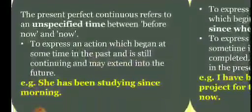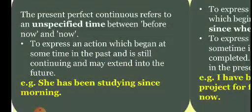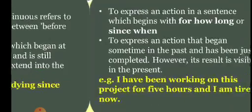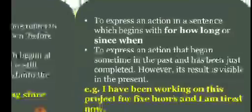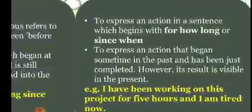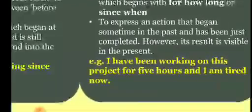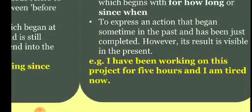The present perfect continuous refers to an unspecified time between before now and now. It is used to express an action which began at some time in the past and is still continuing and may extend into the future, or an action beginning with 'for how long' or 'since when', or an action just completed whose result is visible in the present. Example: I have been working on this project for 5 hours and I am tired now.